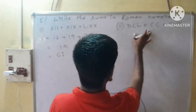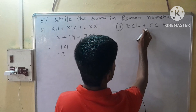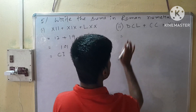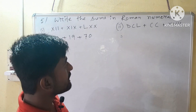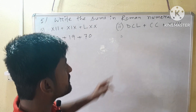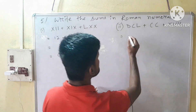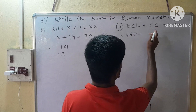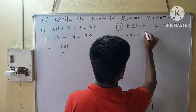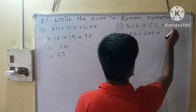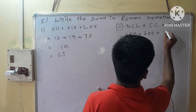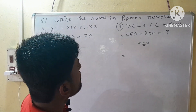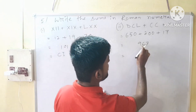In Roman number 2, we have DCL plus CC plus XLII. D means 500, C means 100, and L means 50, so DCL makes 650. CC double-C makes 200, plus XLII will be 70. After then we convert the result — 967 — into Roman numerals.